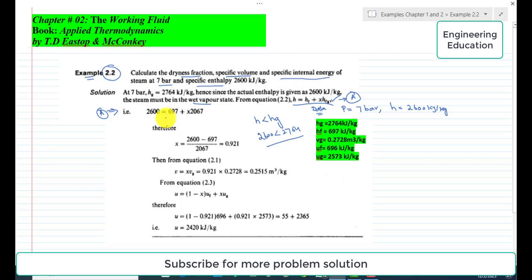2600 = 697 + x(2067). Here 2067 is the value of hfg, which is hg minus hf. hg is 2764 and hf is 697. If we take the difference of these two specific enthalpies, we get 2067.